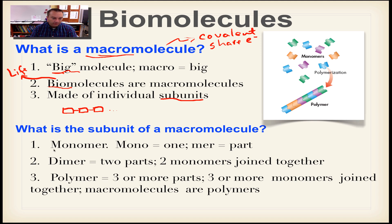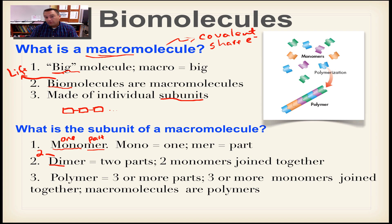The subunit is called a monomer. The word 'mono' simply means one, and 'mer' means part — so one part. If you had two monomers connected together, that's called a dimer — 'di' means two. If you had three or more monomers joined together, that would be called a polymer — 'poly' means three or more parts, so we just say three-plus monomers.